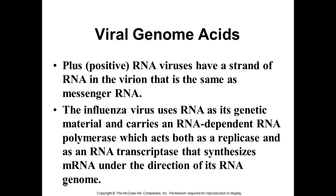Minus or negative strand is when you run into problems, because the ribosome is not going to read it. The influenza virus is RNA — specifically negative-strand RNA. Its genetic material is RNA, and it carries with it an RNA-dependent RNA polymerase — an enzyme that makes RNA from RNA — which is exactly what an RNA virus needs.